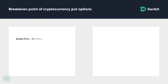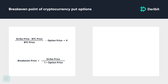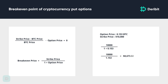The put option is at breakeven when (strike price minus BTC price) over the BTC price minus the option price equals zero. Rearranging this formula to solve for the BTC price gives: strike price / (1 + option price). Taking the previous example where the option price was 0.153 BTC and the strike price was $10,000, the breakeven price would be $10,000 / 1.153, or $8,673.02 rounded to the nearest penny.